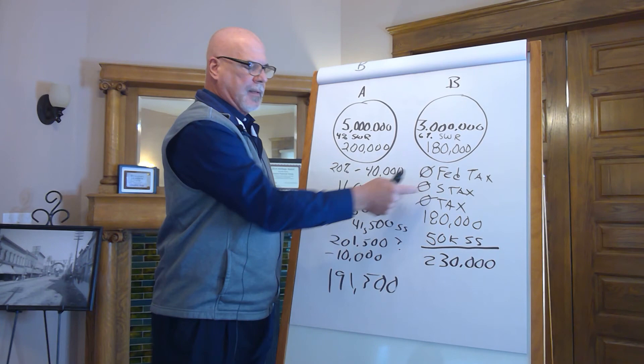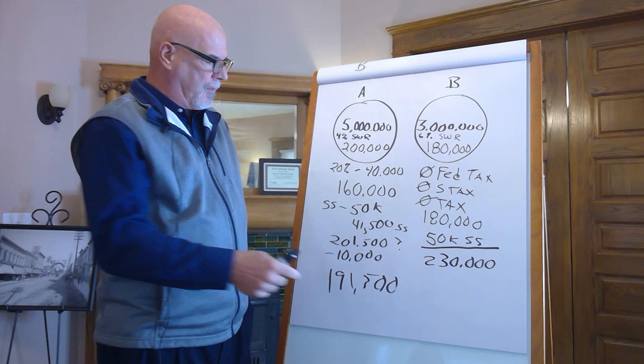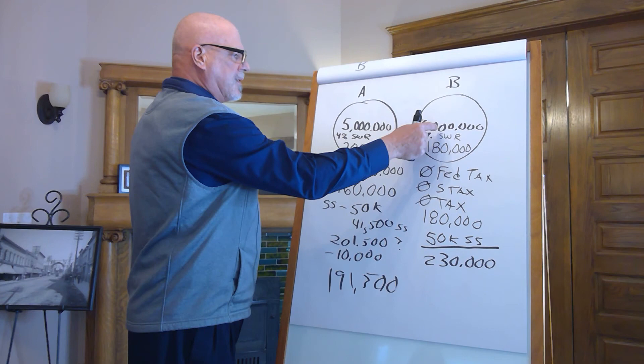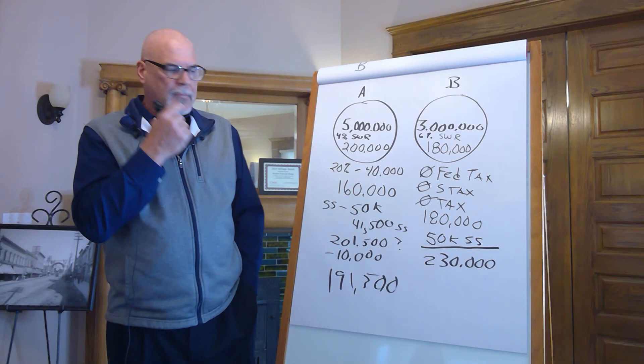What about Medicare? It's treated the same way. This doesn't exist. It doesn't exist on the radar screen of the IRS. You get to pay the lowest Medicare premium there is. You get to spend $230,000. Right here, you get to spend $191,000. Yet, you started with 40% more. We took 60% of what you had over here and gave you 20% more spendable money.